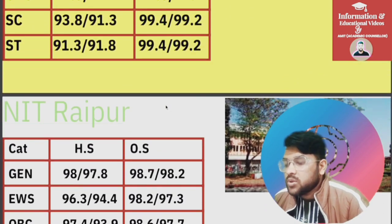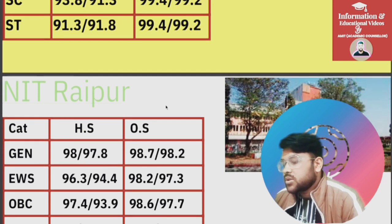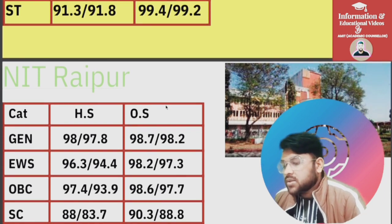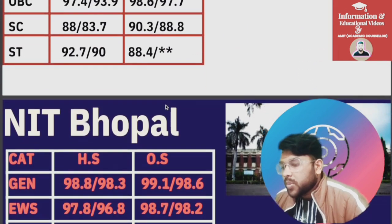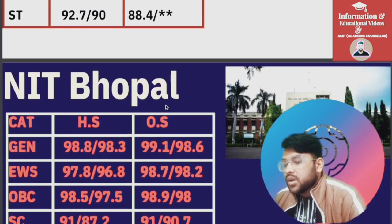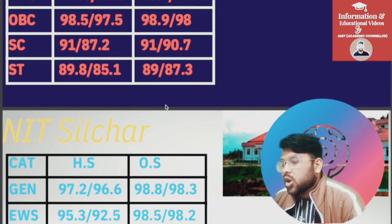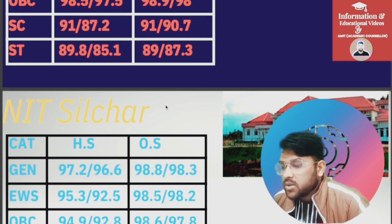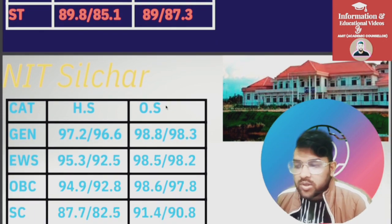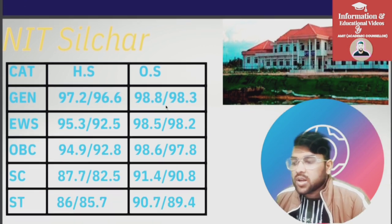For NIT Raipur: General 98.7, EWS 98.2, OBC 98.6, SC 90.3, ST 88.4 percentile. For NIT Bhopal: General 98.8, EWS 98.5, OBC 98.6, SC 91.4, ST 90.7 percentile.